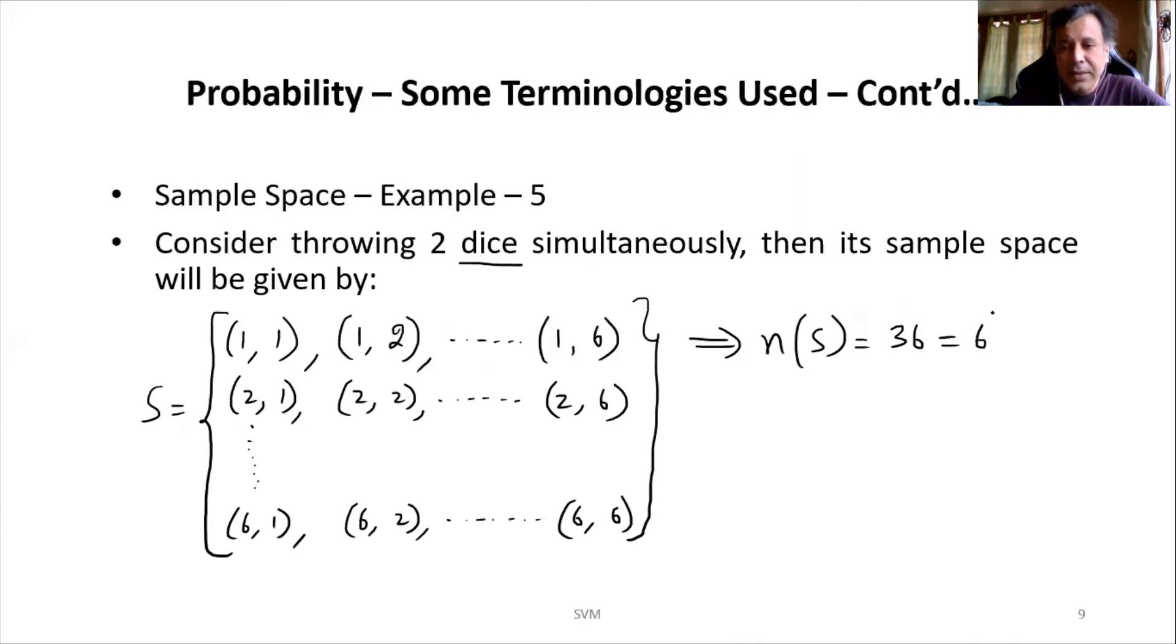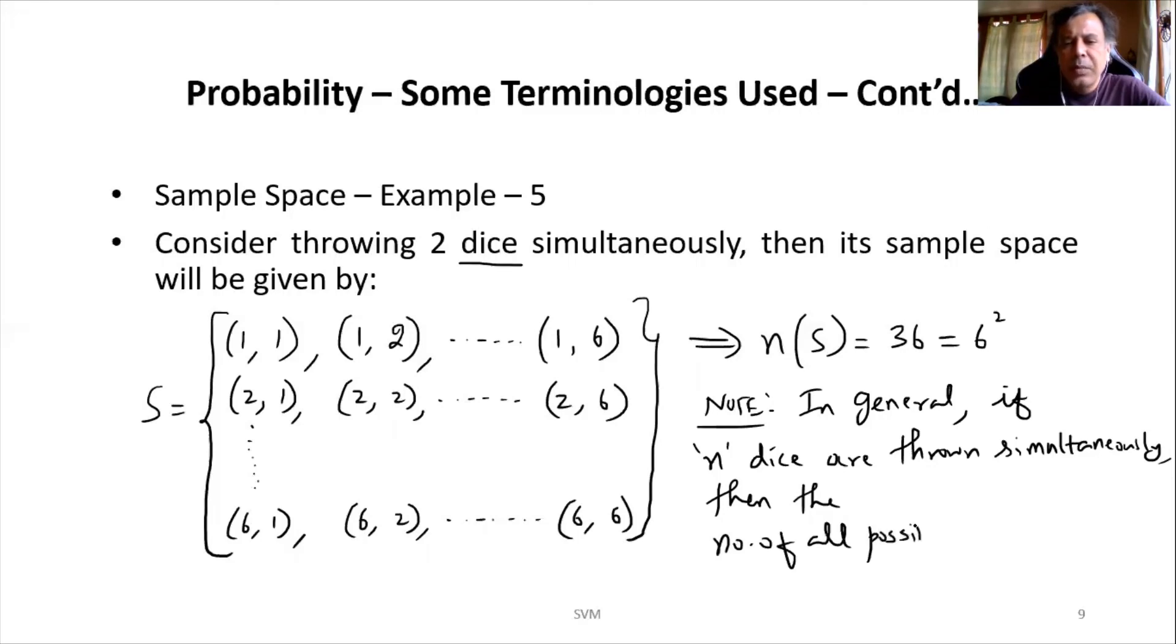In the previous example—example 4—we have single die thrown, so it is giving me a total number of outcomes as 6. In this case it is giving me total outcomes as 36. Again we can try to generalize. I can write this as 6 to the power of 1, and this 36 I can write as 6 square. So again we can generalize this. Note: in general, if n dice are thrown simultaneously, then the number of all possible outcomes will be 6 to the power of n.